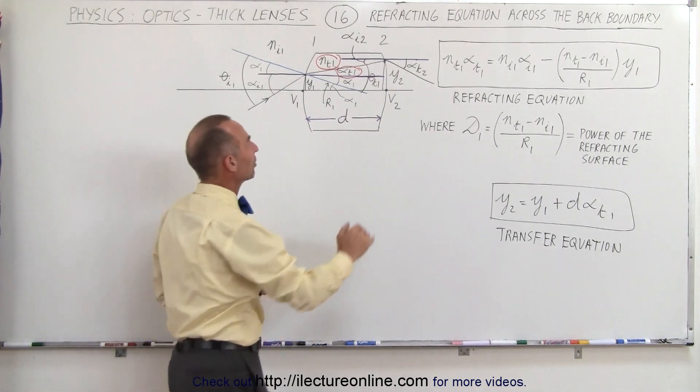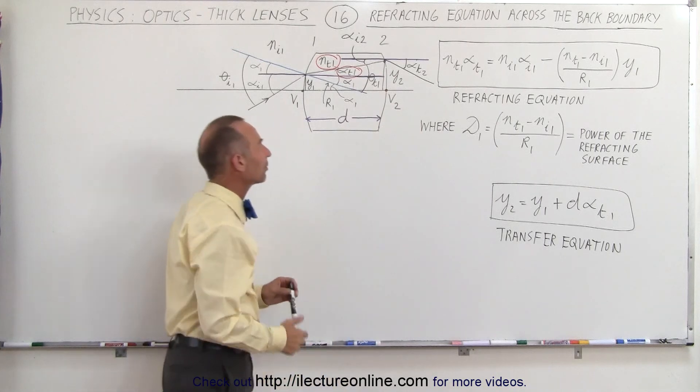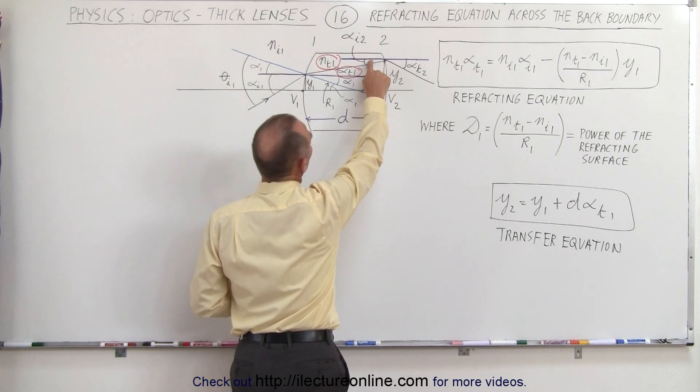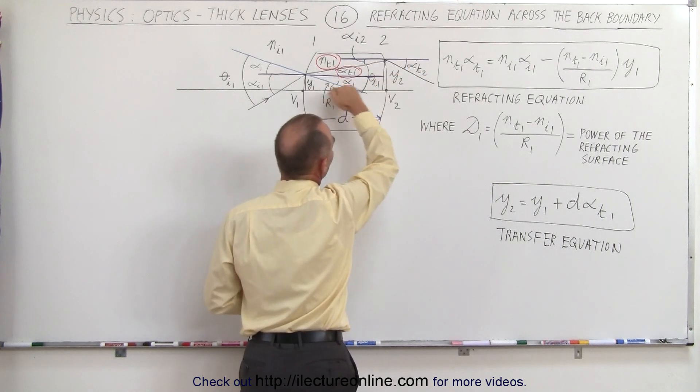Now we're going to come up with an equation that describes what happens when it crosses the back boundary or the second boundary of the lens. Notice it's going to be relative to these two angles which are relative to the horizontal line here which is parallel to the optical axis.